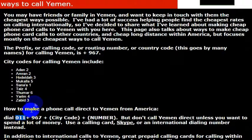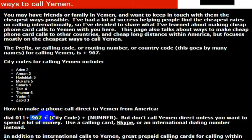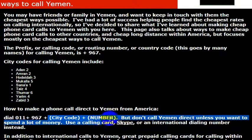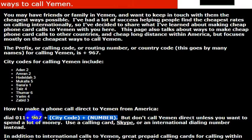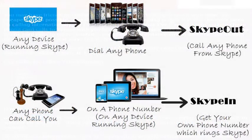To make a phone call to Yemen, you would dial 011, then the country code of 967, and then the phone number that you wanted to reach. Again, the country code for Yemen is 967.